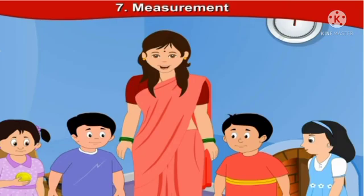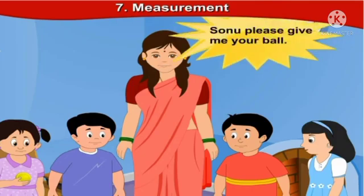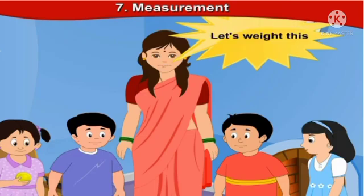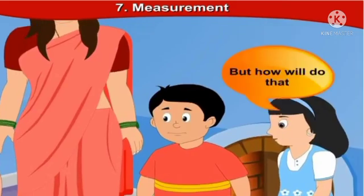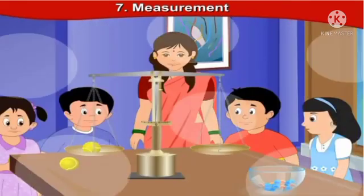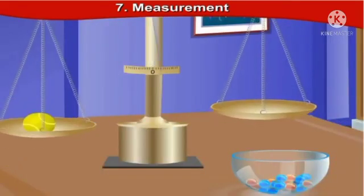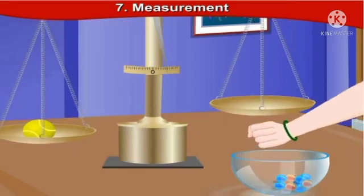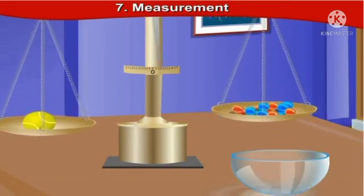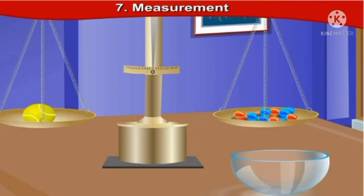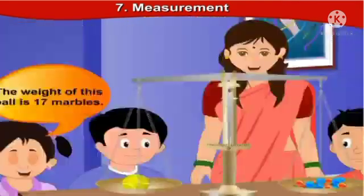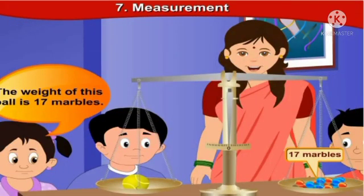Now let's see few examples to understand the concept of weight easily. So now please give me your ball. Let's weigh this. But how will we do that? This is weighing balance. On one side I will keep ball and on the other side I will put some marbles. What is the weight of the ball? How many marbles? Can you tell? The weight of the ball is 17 marbles.